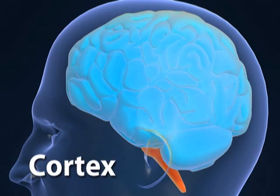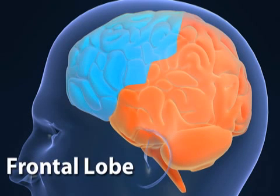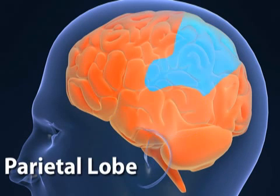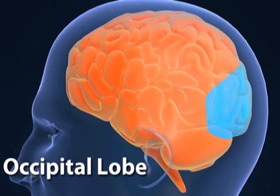The cortex, or thinking part of the brain, is divided into four lobes: frontal, temporal, parietal, and occipital. Other deeper brain structures relate to life support functions, movement, and other semi-automatic behaviors.